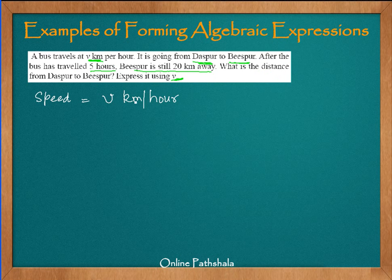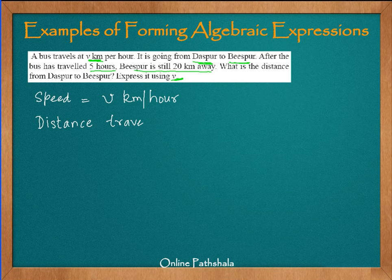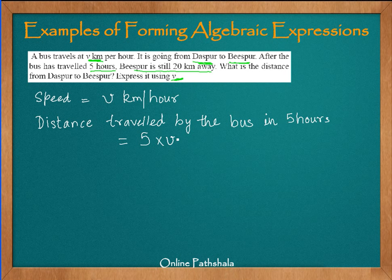The speed of the bus is V kilometers per hour — it simply covers V kilometers per hour. The bus has travelled for 5 hours, and Bispur is still 20 kilometers away. We need to find the distance from Daspur to Bispur. First, let us find how much distance the bus has travelled. Distance travelled by the bus in 5 hours equals 5 multiplied by V, or 5V kilometers.